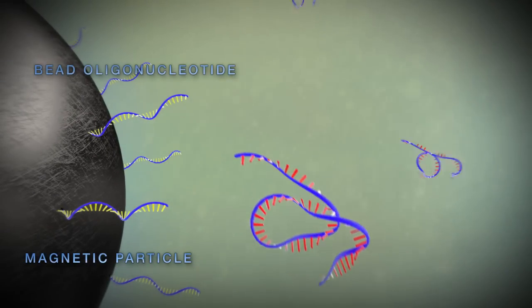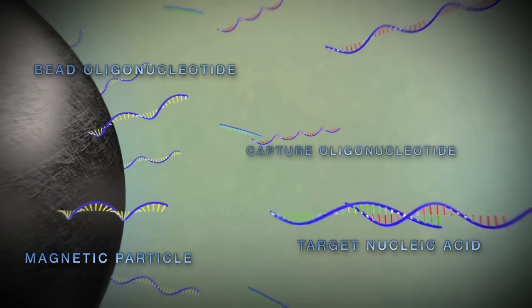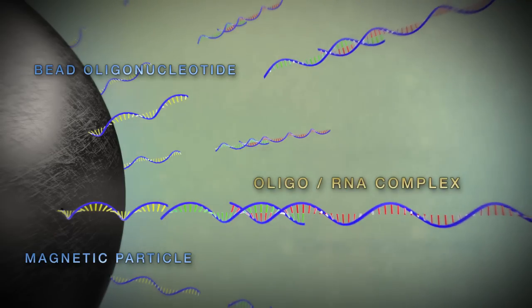These beads are coated with a specific oligonucleotide tail. This tail binds the capture oligonucleotide RNA target complex to the magnetic bead.